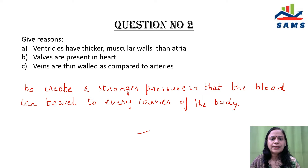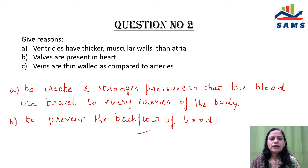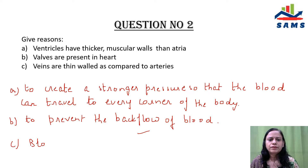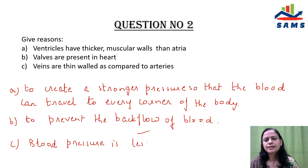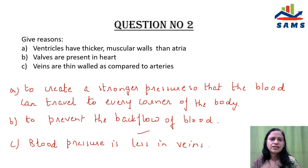Valves are present in the heart to prevent the backflow of blood, so that blood doesn't flow in the reverse direction. For the third part — veins are thin-walled compared to arteries — because blood pressure is more in arteries and less in veins. Since the pressure is less in veins, there is no fear of bursting, so the walls are thin. In arteries, thick walls bear the high blood pressure. These two points are mutually related.